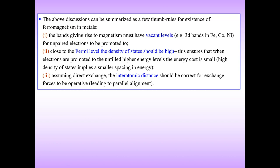The above discussion can be summarized as a few thumb rules for the existence of ferromagnetism in materials. First, the band giving rise to magnetism must have vacant levels for unpaired electrons to be promoted to. Second, close to the Fermi level the density of states should be high, ensuring a small energy cost for promotion. Third, assuming direct exchange, the inter-atomic distance should be correct for the exchange force to be positive, leading to parallel alignment of moments.